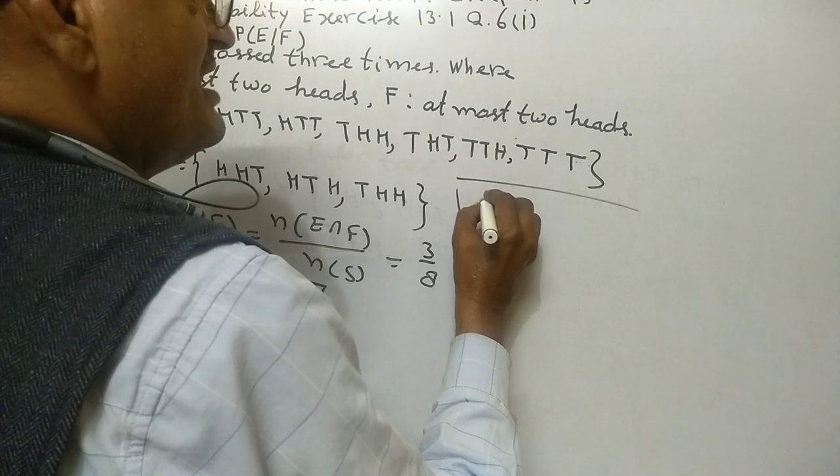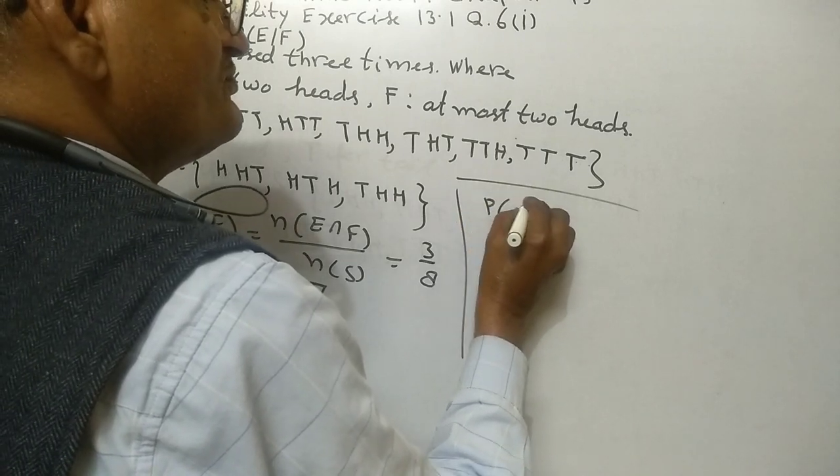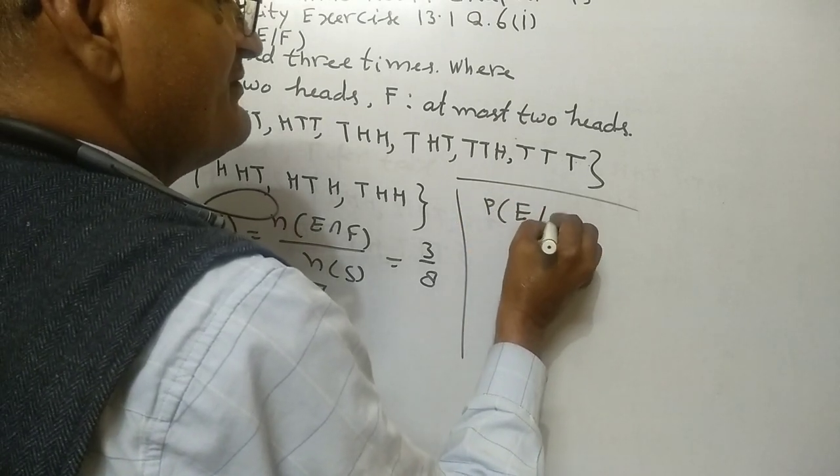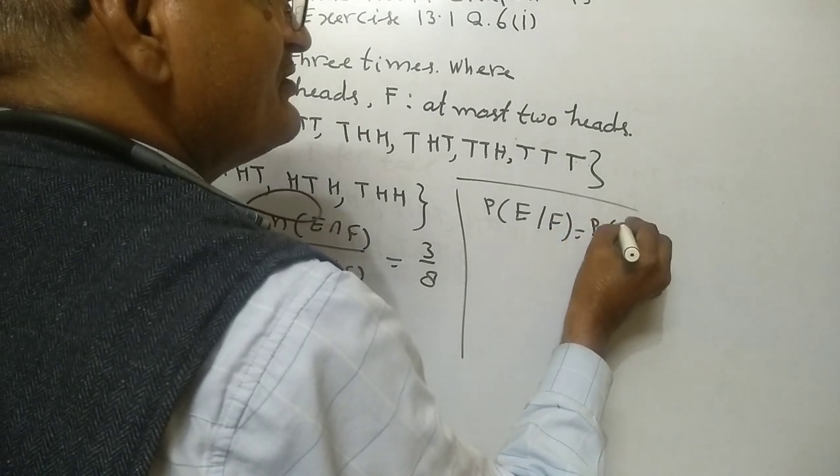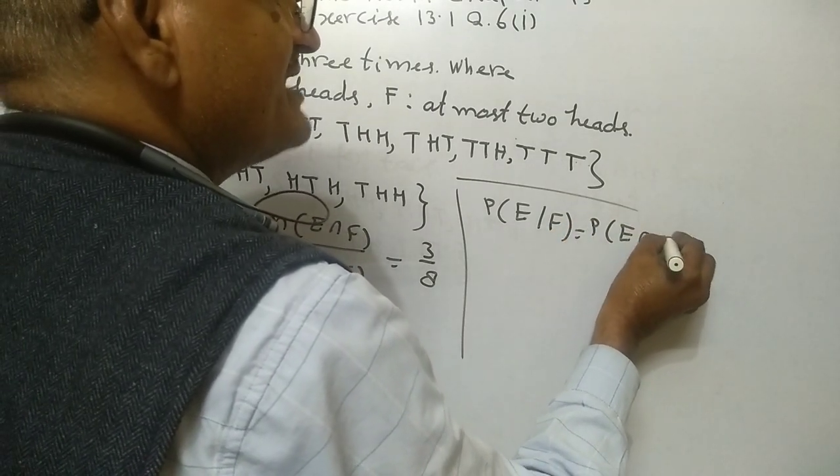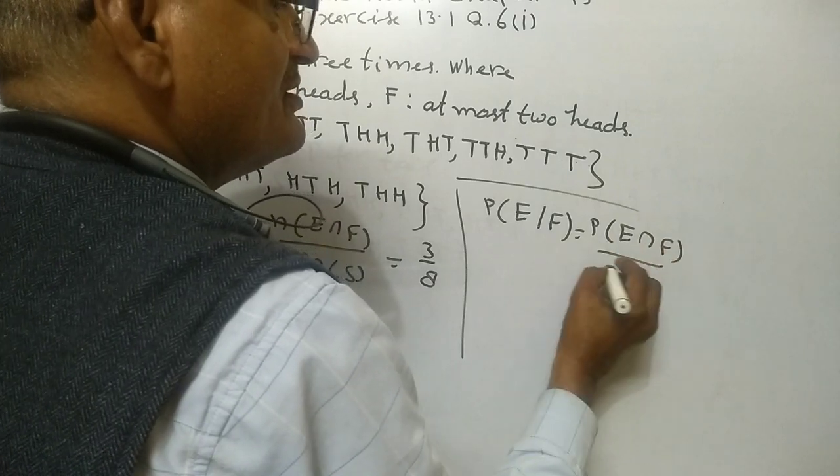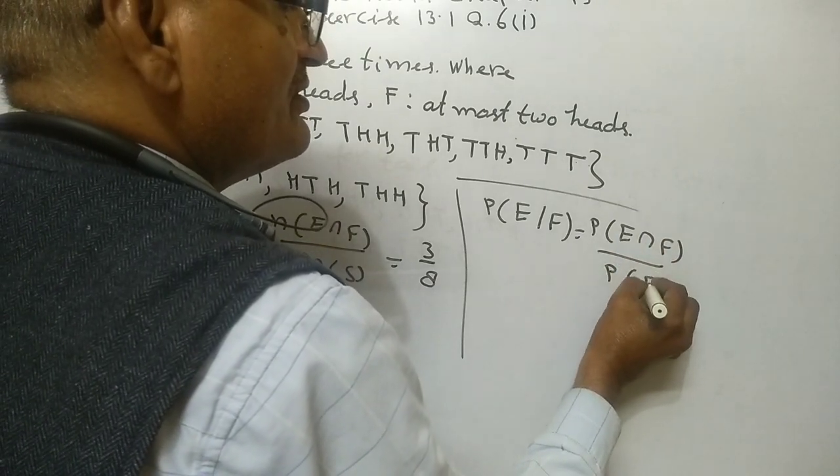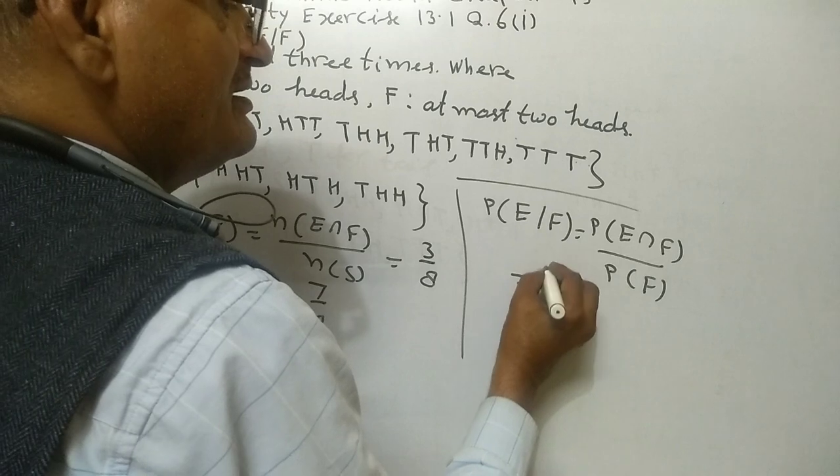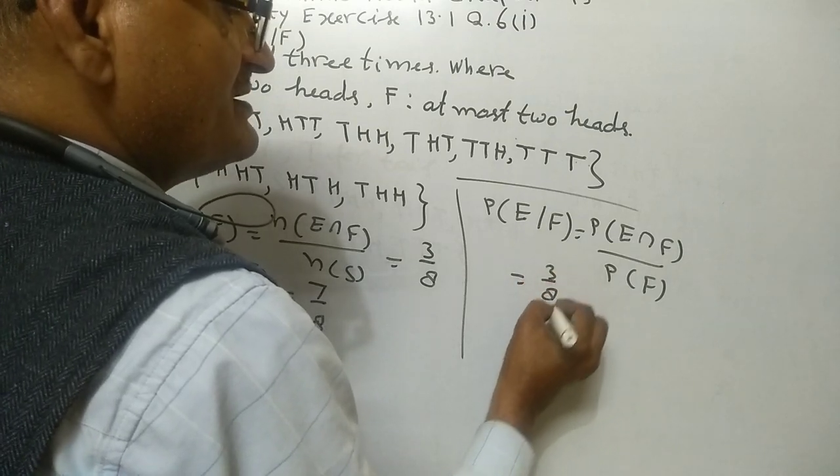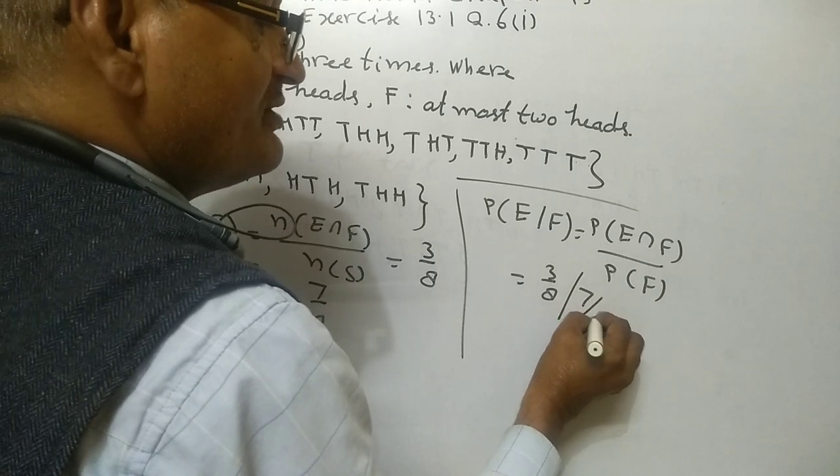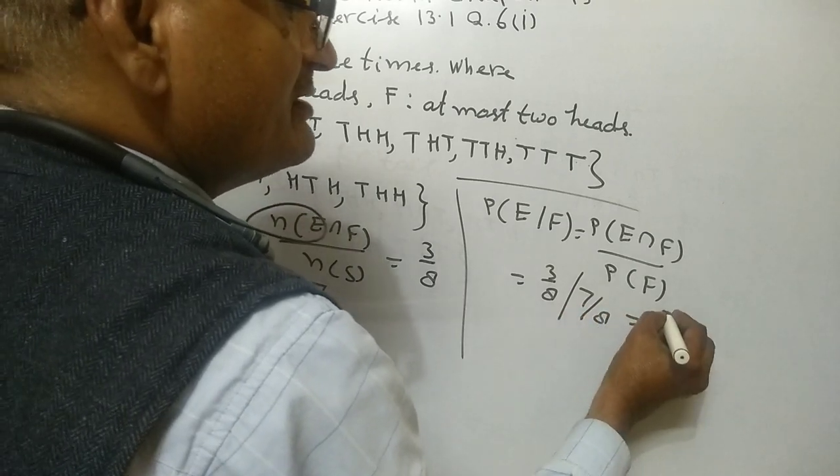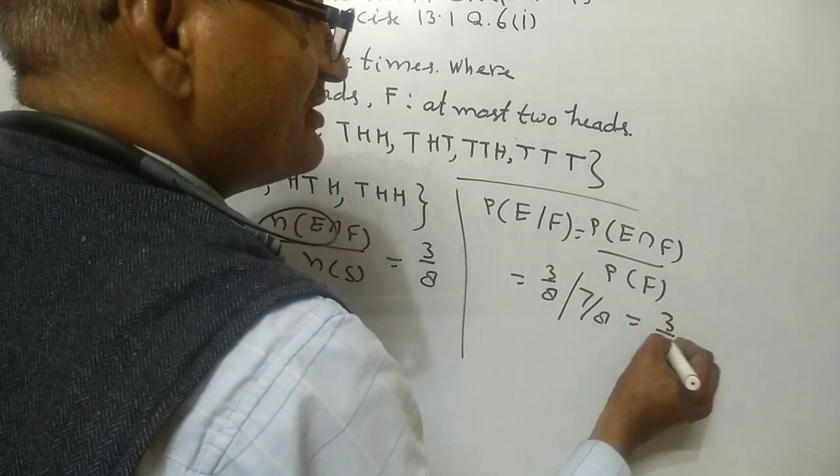Now, probability of E upon F equals probability of E intersection F upon probability of F equals 3 upon 8 divided by 7 upon 8, which equals 3 upon 7.